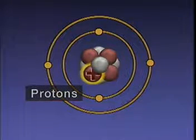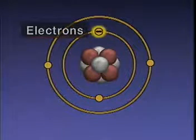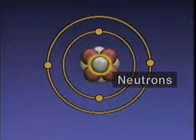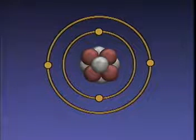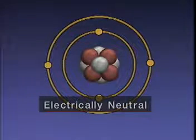Protons have a positive electrical charge. Electrons have a negative charge, and neutrons don't have a charge. When an atom has the same number of electrons as protons, the positive and negative charges are balanced, and the atom is said to be electrically neutral.